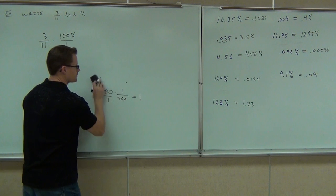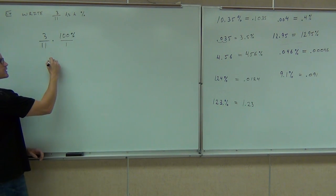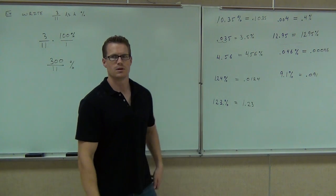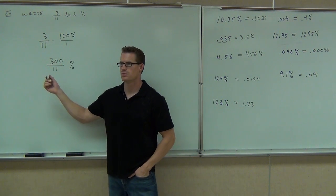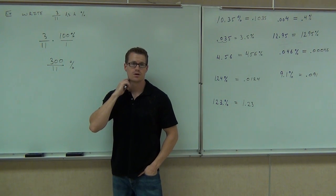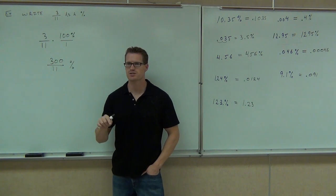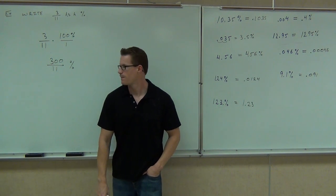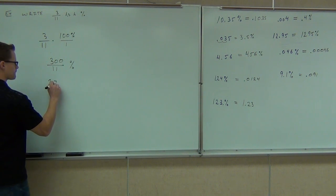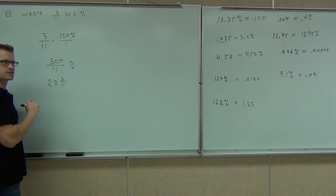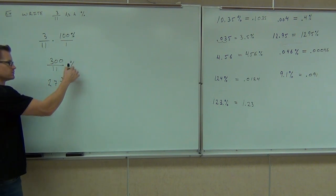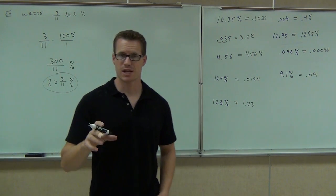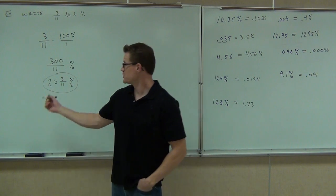So you're going to get 300 over 11 percent. Can you change it back to a mixed number? Use your calculator — put in 300 over 11 using your fraction button, press enter, and it will automatically reduce it and change it to a mixed number. You should get 27 and 3/11. This was the opposite of what we did changing mixed number percents into fractions — if you went backwards, you'd get that exact fraction back.